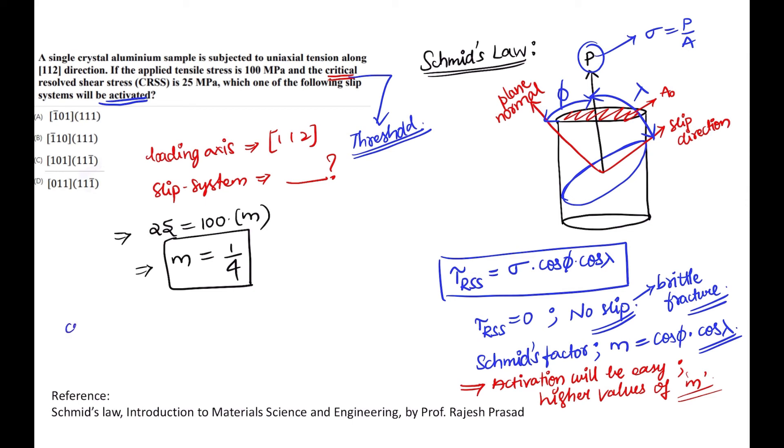So how to go about? We know what is the cos theta formula. So if you have h1 k1 l1 and h2 k2 l2, how to calculate the angle between them is very simple, right? Just the dot product h1 h2 plus k1 k2 plus l1 l2 divided by the magnitude root of h1 square plus k1 square plus l1 square into root of h2 square plus k2 square plus l2 square. So this is how you need to calculate cos phi values and cos lambda values and finally the values of m.